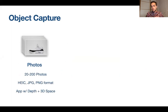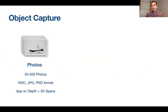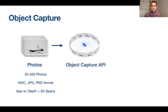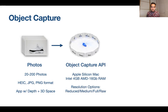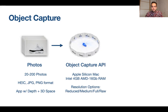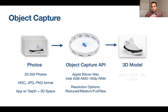For object capture, the input is recommended 20 to 200 photos in HEIC, JPEG, or PNG formats. The companion app allows you to leverage depth data as well as the location of the phone in space when the photos were taken. This is then sent to the object capture API, which is only supported on Apple Silicon Macs and Intel Macs that have at least a 4GB AMD GPU and 16GB of RAM. The resolution options are reduced, medium, full, and raw. The output formats are USDZ, USDA, and OBJ.